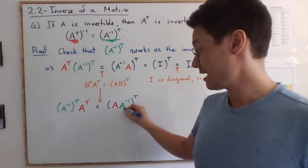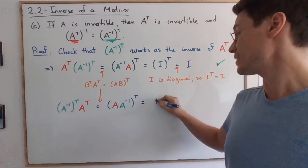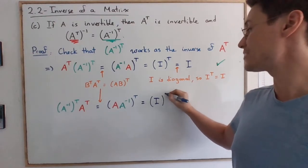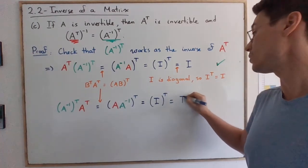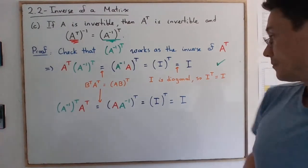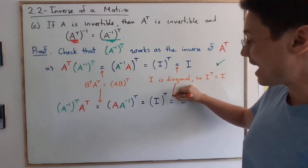That being said, as you can see, this is also equal to I. So you have I transpose, which equals I, following the exact same argument.